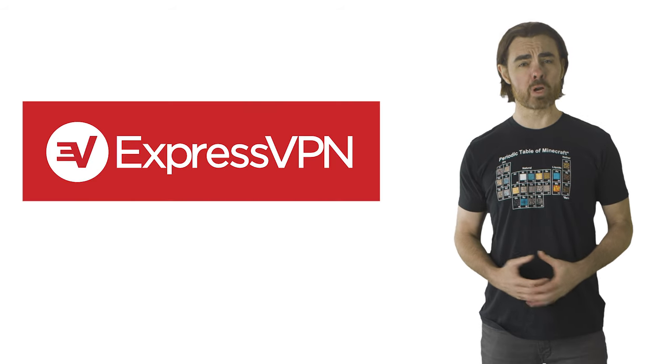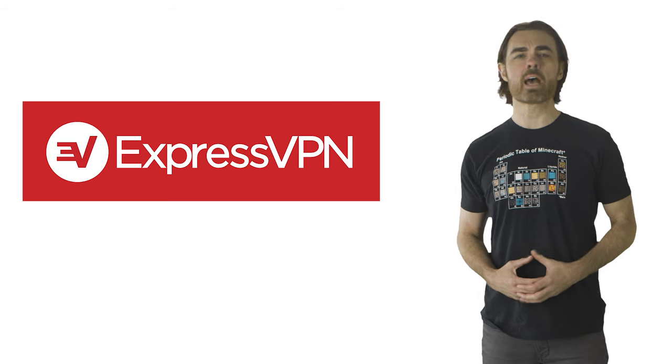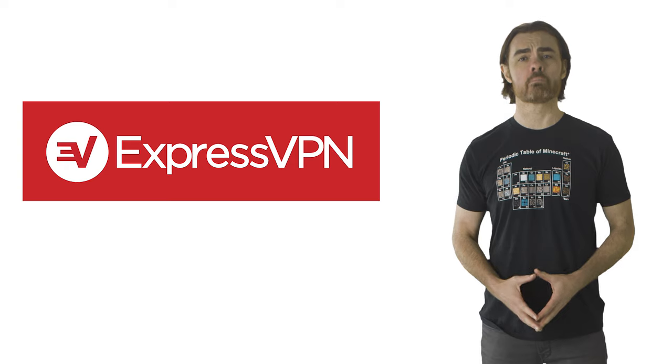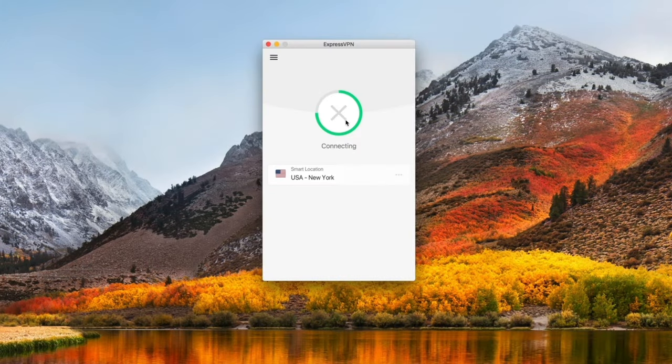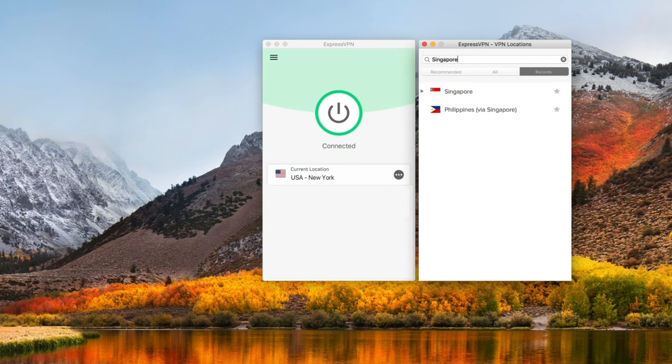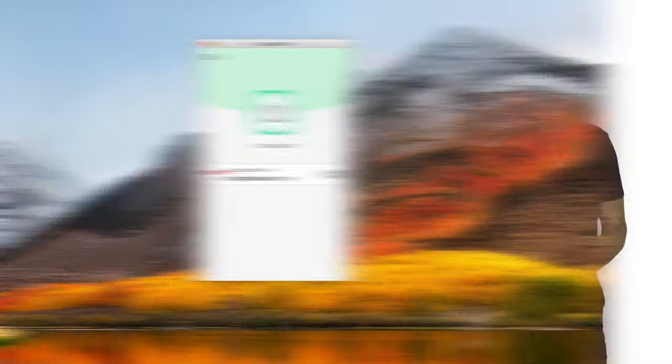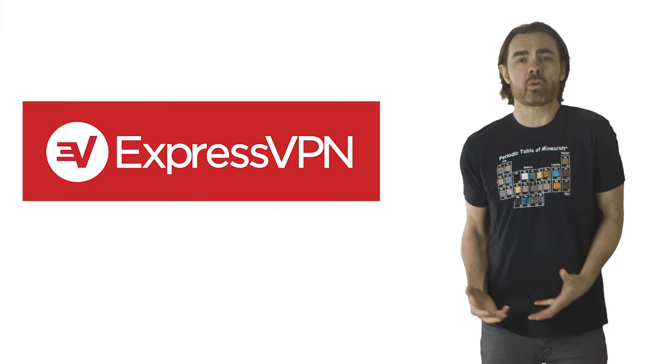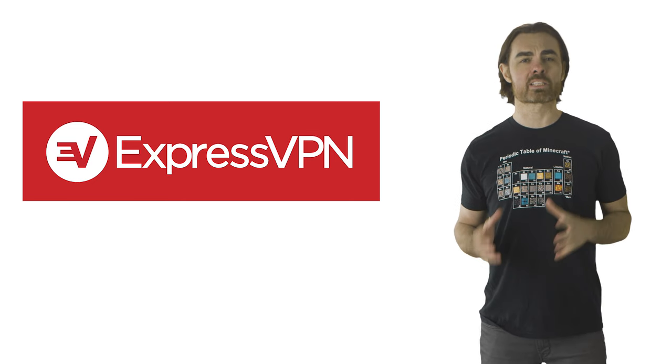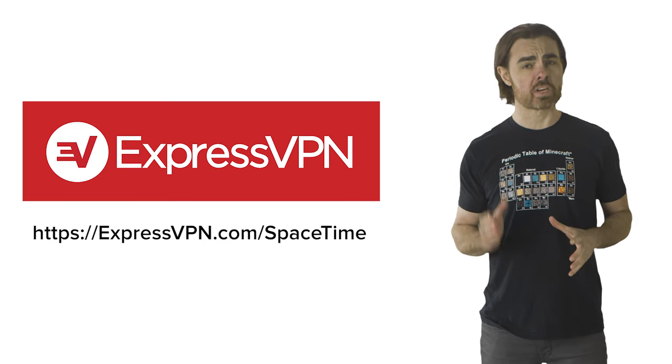Thank you to ExpressVPN for supporting PBS. ExpressVPN allows its users worldwide to protect their privacy and security when browsing online. I travel a lot, and I'm often working from cafes and see tons of people using public wifi. When you connect to wifi, your personal information can be at risk to any hacker on the same network. ExpressVPN creates a secure tunnel between your device and the internet, encrypting all of your data so your credit card info, account logins and personal information remain for your eyes only. You can learn more at expressvpn.com slash spacetime.